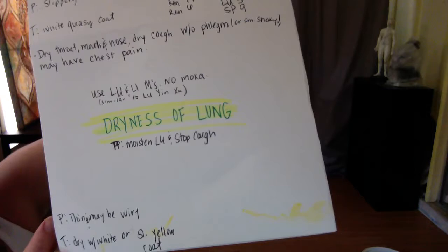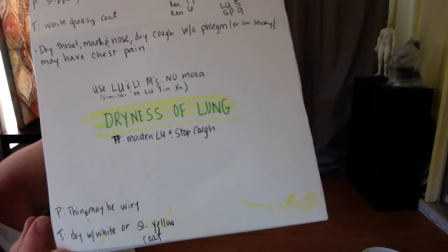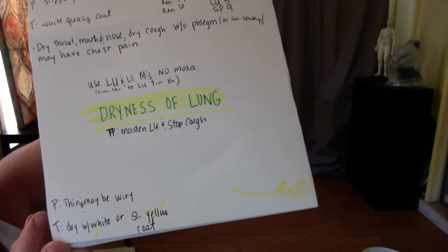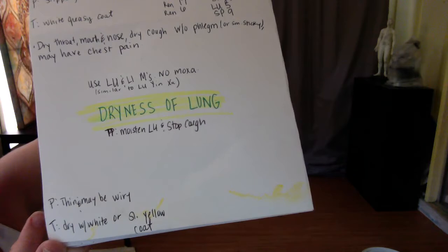May have chest pain. Dryness of lung treatment principle: moisten lung and stop cough. Use lung and large intestine meridians. No moxa, which is similar to lung yin deficiency. Pulse is thin, maybe wiry. Tongue is dry with white or slight yellow coat.